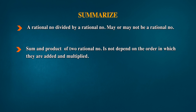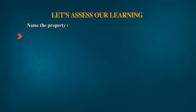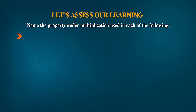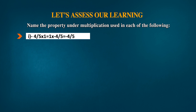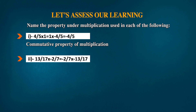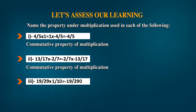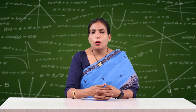Let us assess our learning — recall the property under multiplication used in each: First, (-4/5) × 1 = 1 × (-4/5) = -4/5: this is the Commutative property of multiplication. Second, (-13/17) × (-2/7) = (-2/7) × (-13/17): this is also the Commutative property of multiplication. Third, (-19/29) × (1/10) = -19/290: this is the Closure property under multiplication.